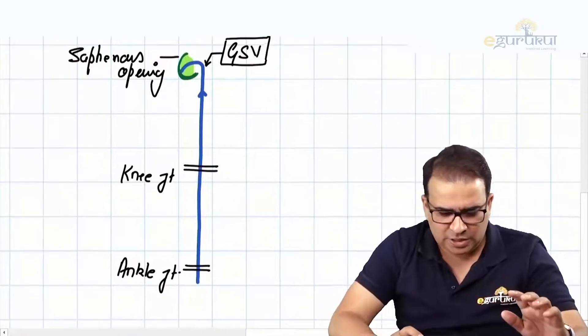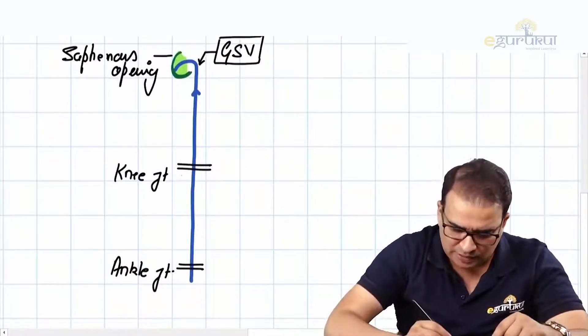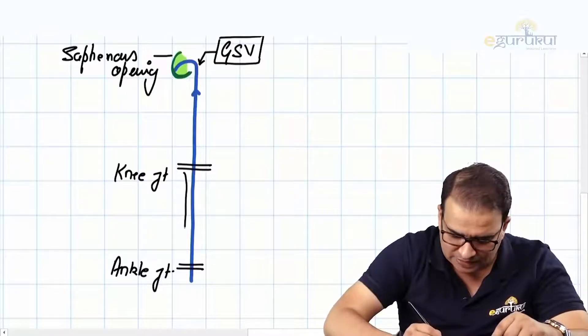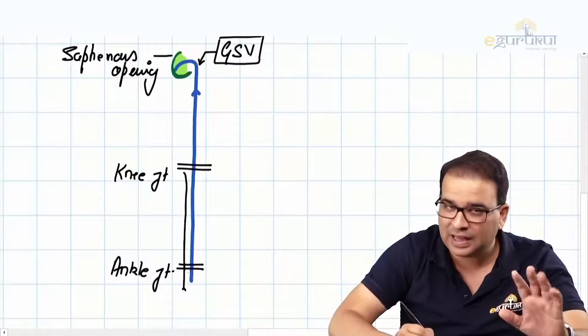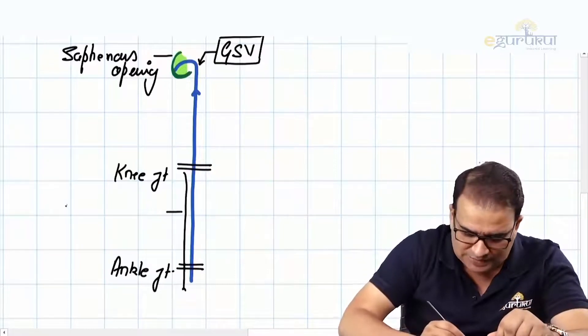The one relation I want to show: the nerve running with the great saphenous vein all the way in the leg and foot - not in the thigh, but in the leg and foot - that was the saphenous nerve.